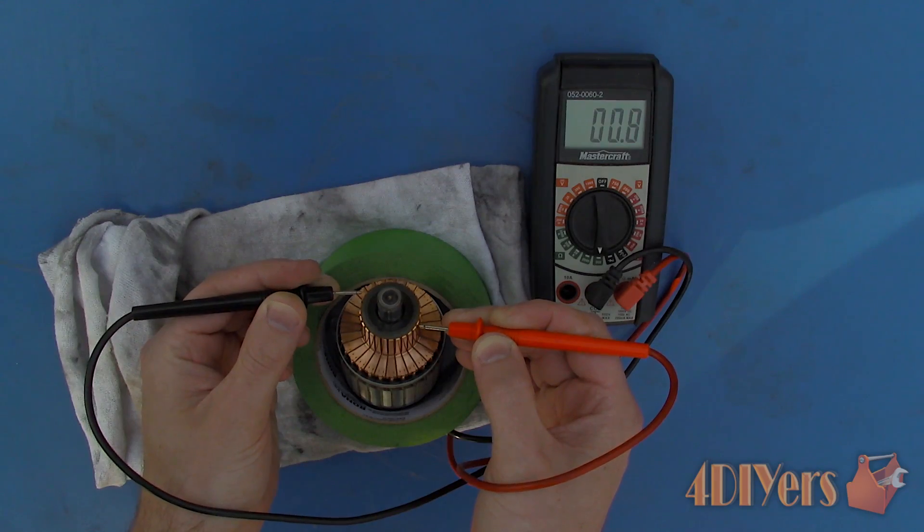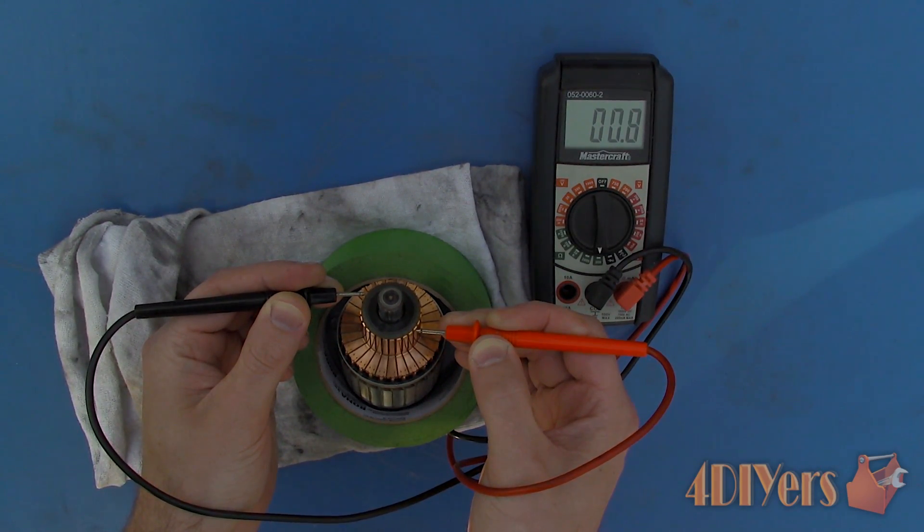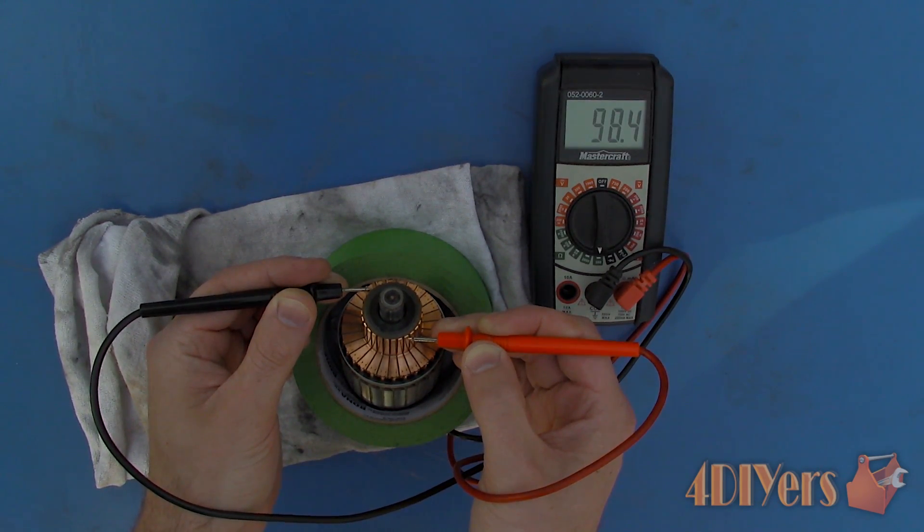Again there will be a specific set of readings for this which is dependent on the design of your armature. But what is most important here is there is not a large fluctuation between the values. Otherwise that will indicate a fault as well.